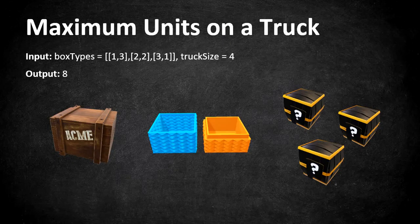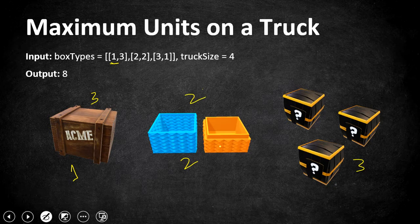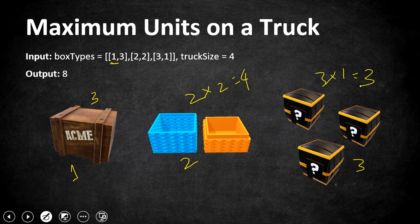Let's understand this with an example. We have three types of boxes: type 1 has one box and can hold three units, type 2 has two boxes and each box holds two units so it can hold four units total, and type 3 has three boxes each holding one unit, so it can hold three units total.